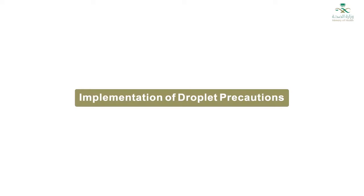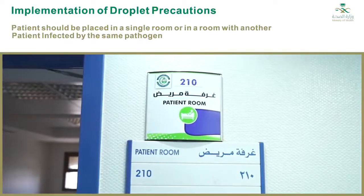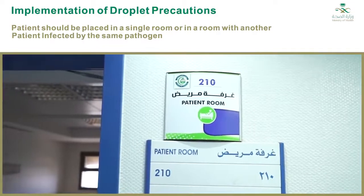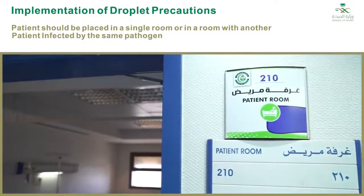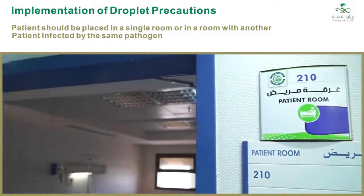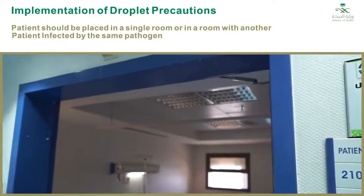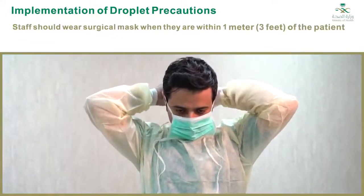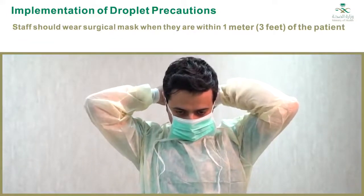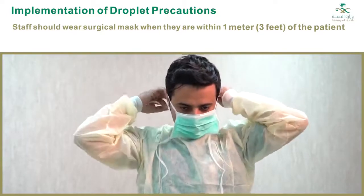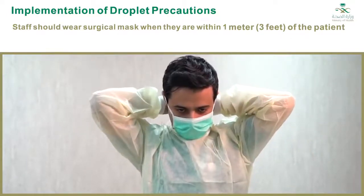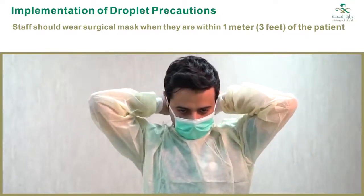Implementation of Droplet Precautions: The patient should be placed in a single room if available, and the door can remain open. If single rooms are not available, patients who are infected or colonized with the same microorganism may share a room. Staff should wear a surgical mask when within one meter of the patient. In addition, the staff should perform hand hygiene prior to entering and immediately after leaving the patient's room.